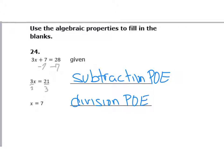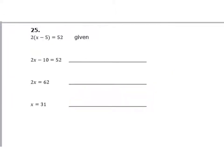To get from 2x minus 5 to 2x minus 10, I distributed the 2 to both terms. Notice this side didn't change at all — it stayed exactly the same. This is the distributive property of equality.